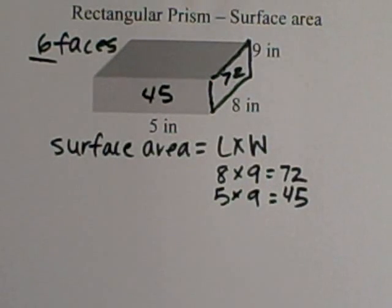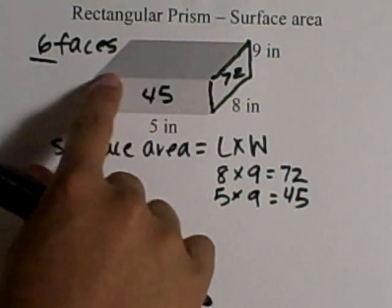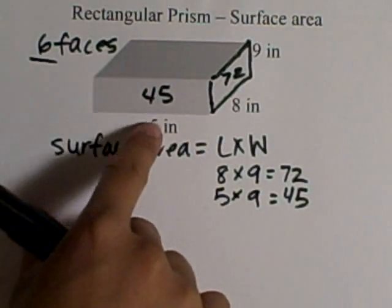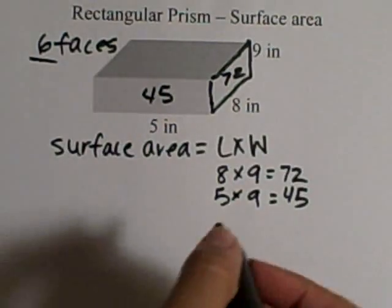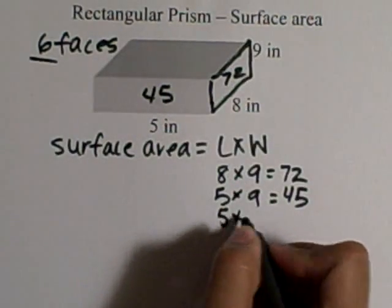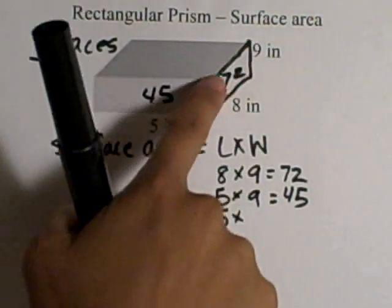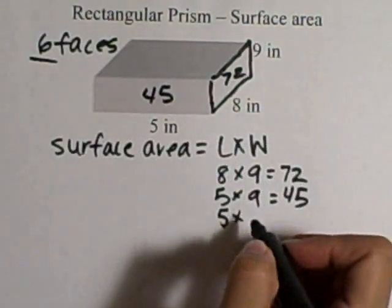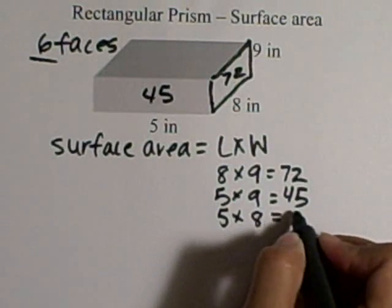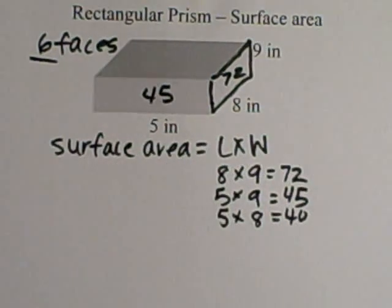The next face that I see is this top face. So now we're going to solve for the top face. Again, we're going to do length times width. Here, I don't have a measurement, but if I keep looking down, I see it lines up with 5. So I'm going to do 5 times—again, I don't have a measurement here, but if I keep looking over, I see that it lines up with 8. So we're going to do 5 times 8, which is 40.